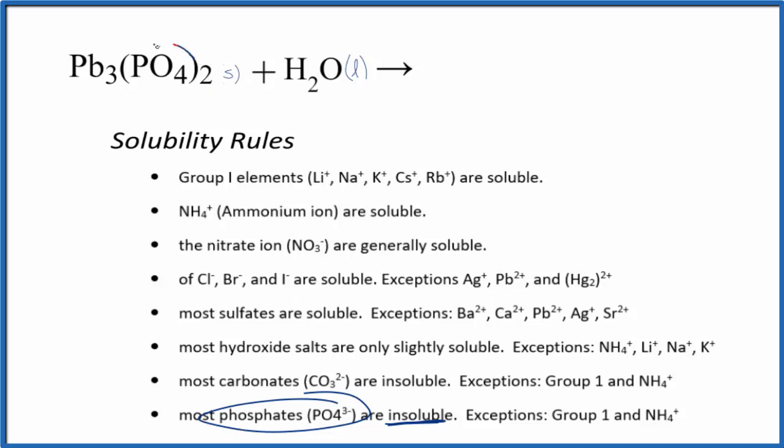We know that the phosphate ion, the whole thing, is 3 minus each one of them, and then lead, that's gonna have to be 2 plus for the charges to balance. So we have three lead 2+ ions, and we have two of these phosphate ions.